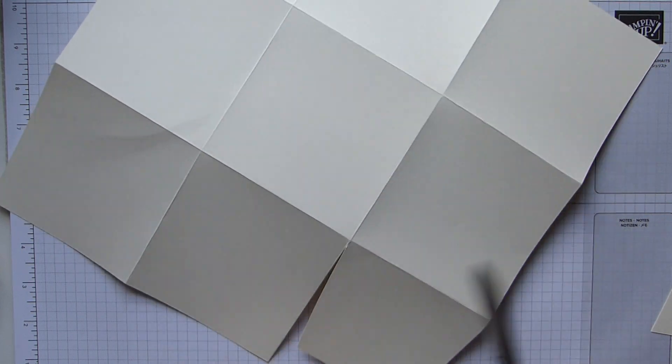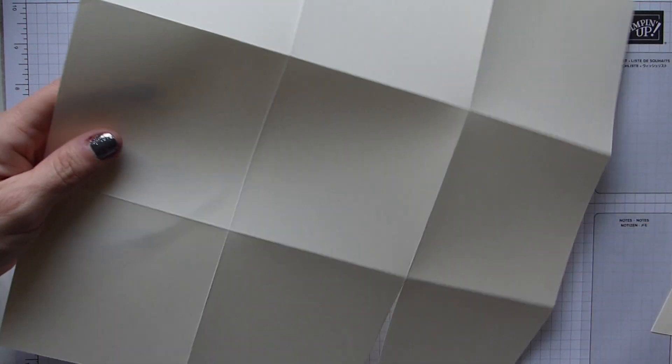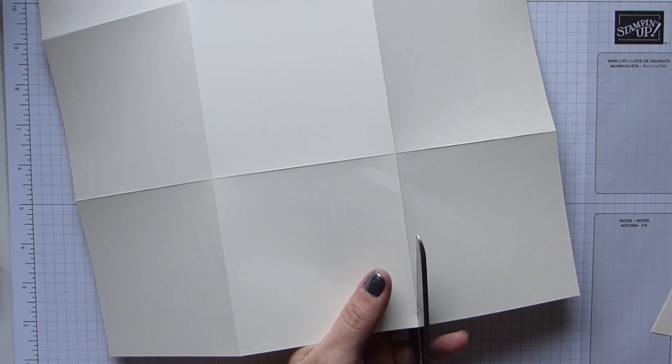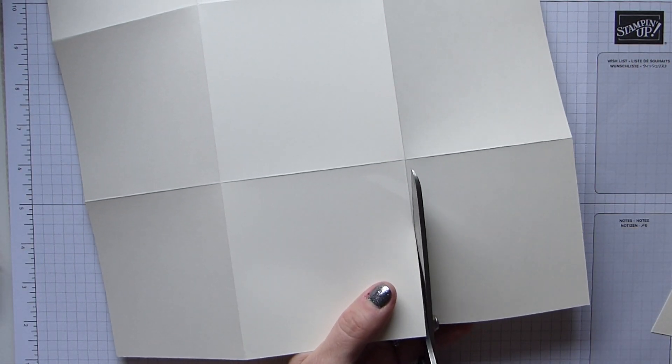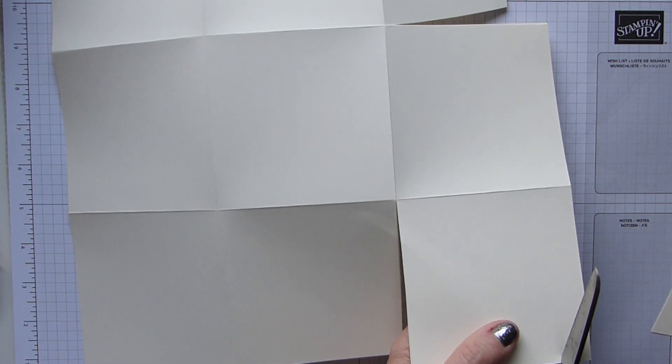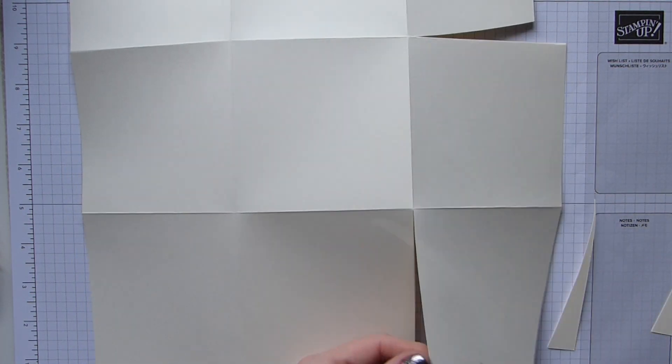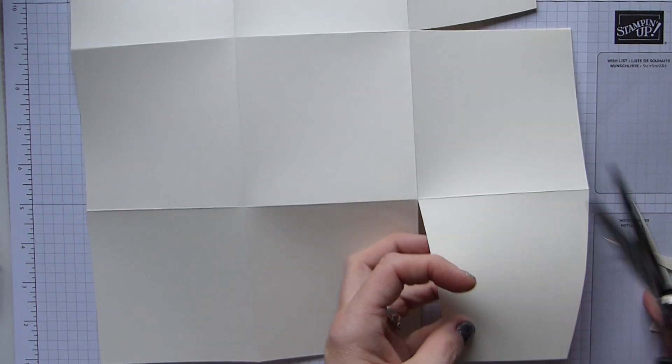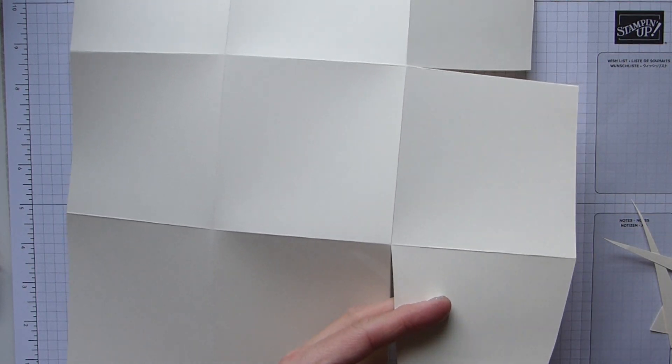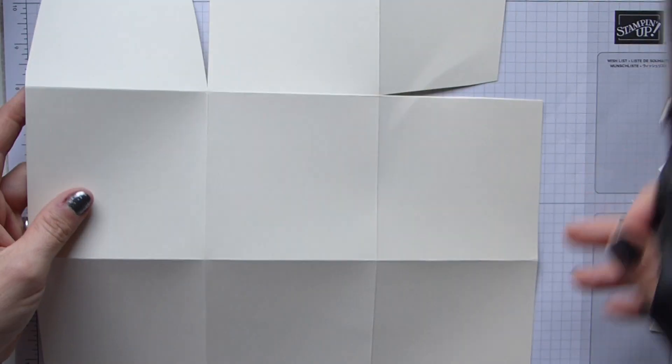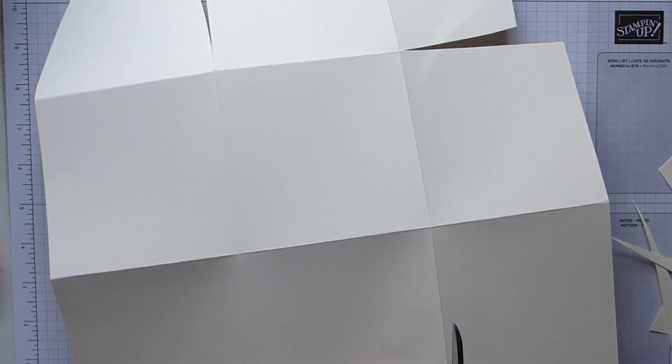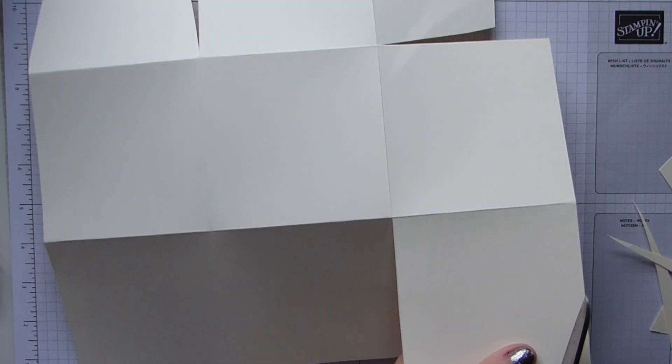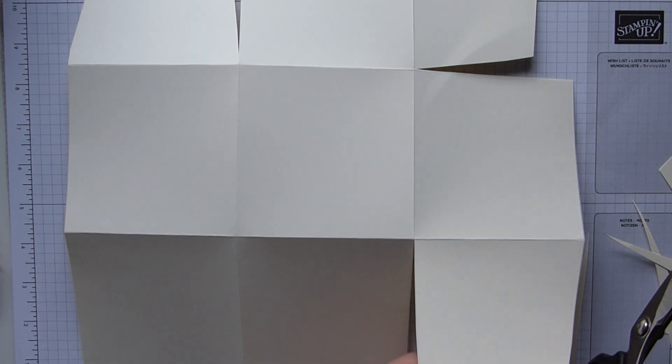You don't need to take much off, maybe just that amount. And then where I've cut that one, I'm going to rotate and cut this way. So you have seen me do these ones before. Just a little bit off, and then rotate again and repeat. And it's really simple.